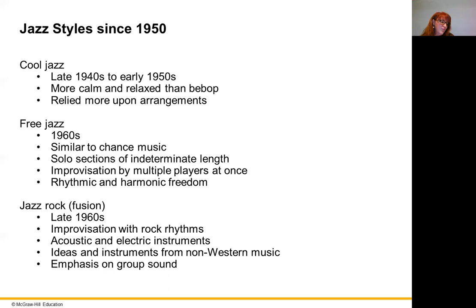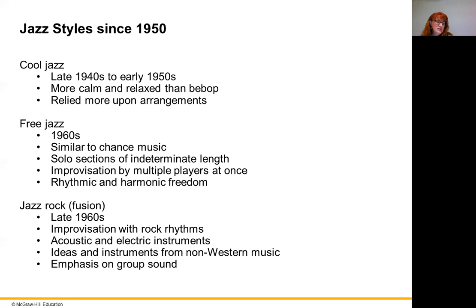Miles Davis — a trumpeter — is well known for all three of these later forms: cool jazz, free jazz, and fusion. He was an improviser, and there is an example of his work in your module. In the late 1960s he began using drugs heavily, and his music became stranger and stranger. Some of his later music is confusing to listen to. These styles all came after around 1950.